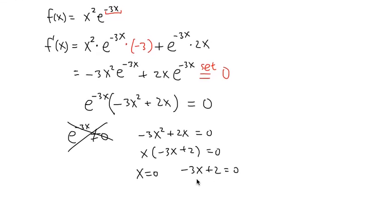And to solve this part, I have to subtract 2 on both sides. I will end up with negative 3x equals negative 2. Divide both sides by negative 3. This is going to be x equals positive 2 over 3.